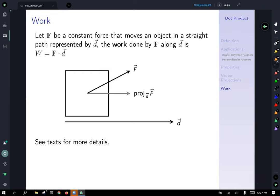Work. We're going to be brief on this one because the text has a very nice explanation and example of this. So let f be a constant force that moves an object in a straight path represented by the vector d. The work done by f along vector d, that path, is work equals the force dotted with the vector d. And that's it for the dot product.